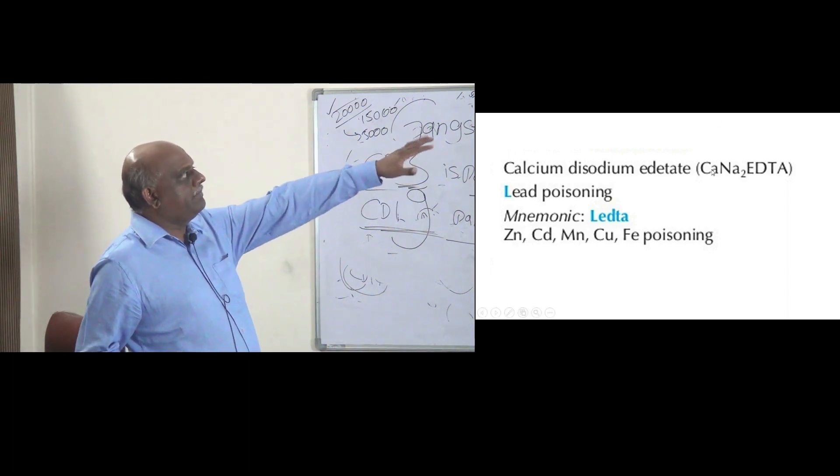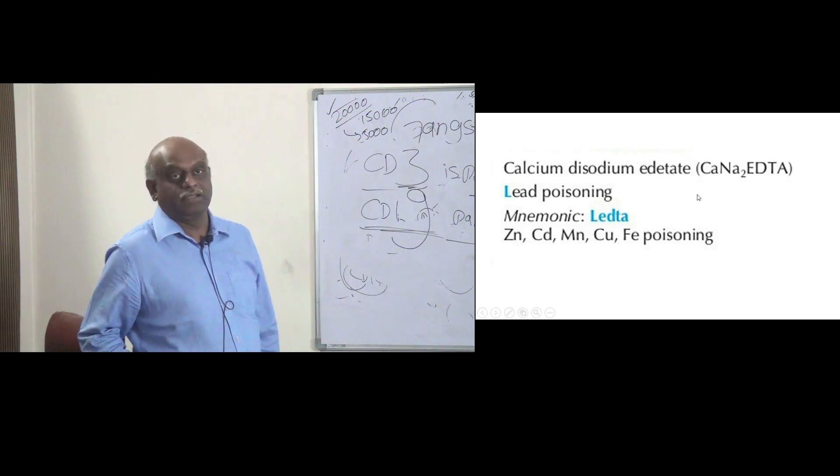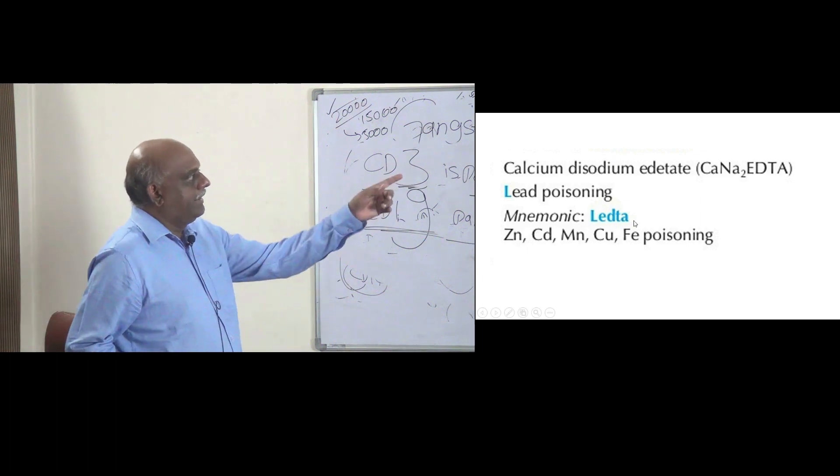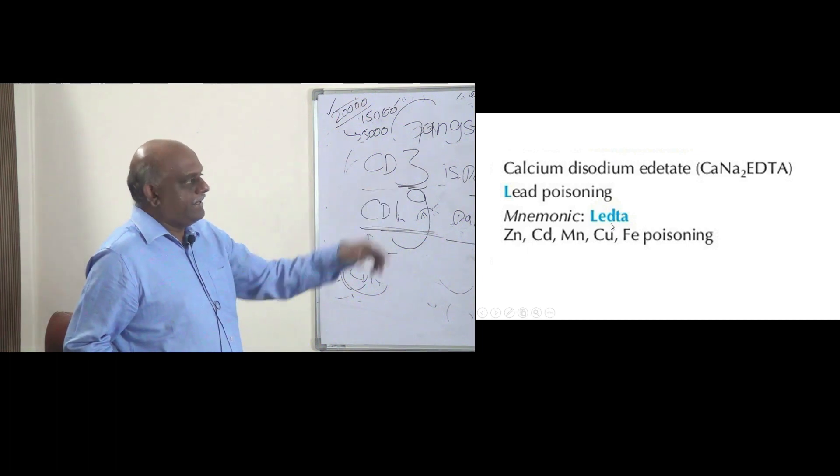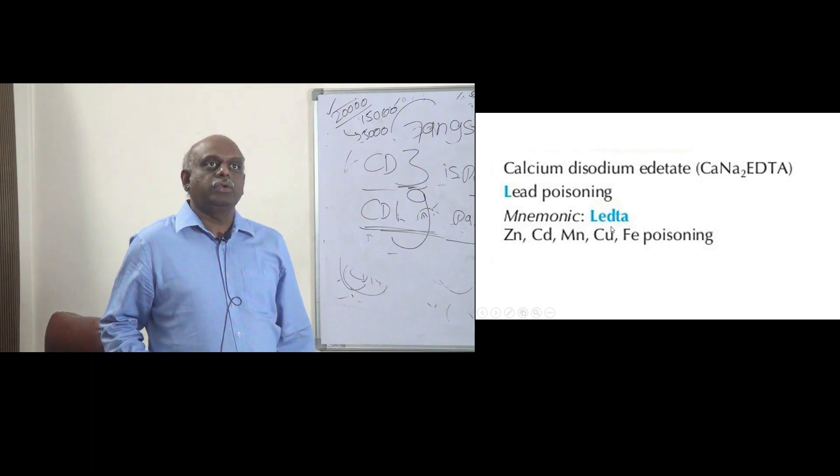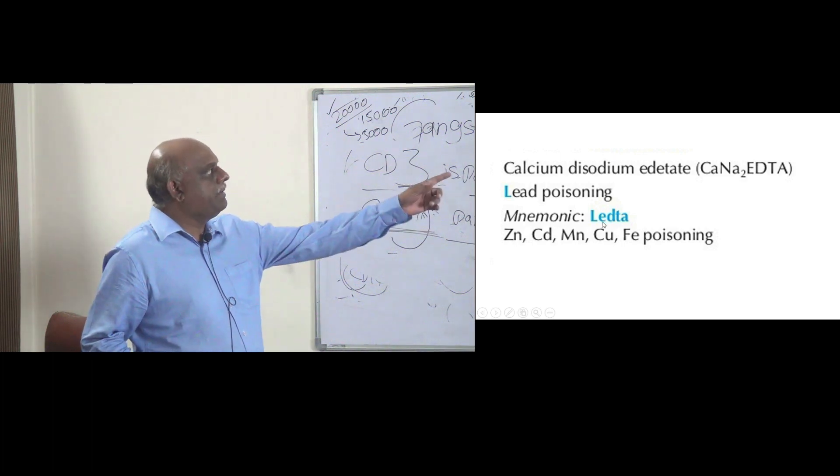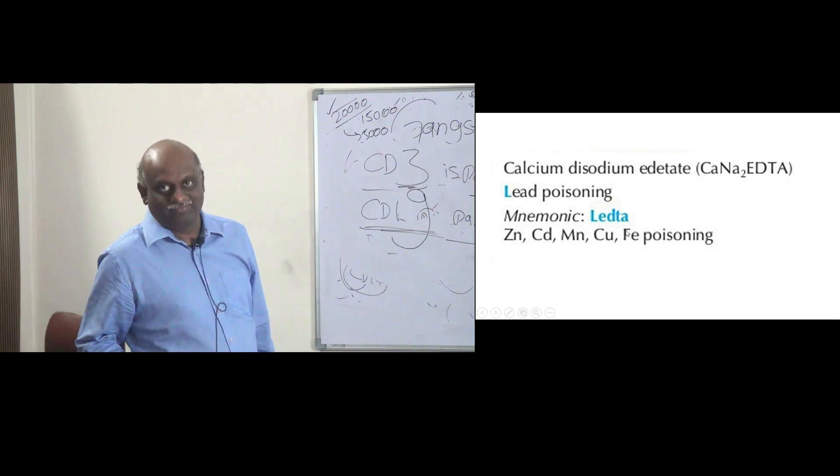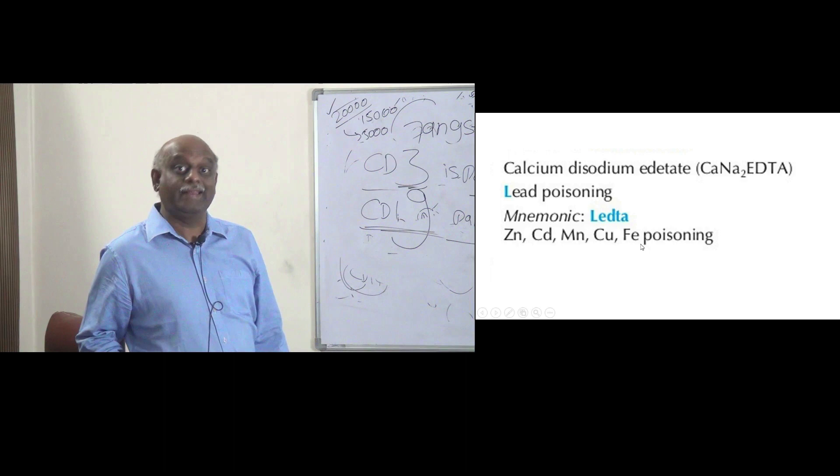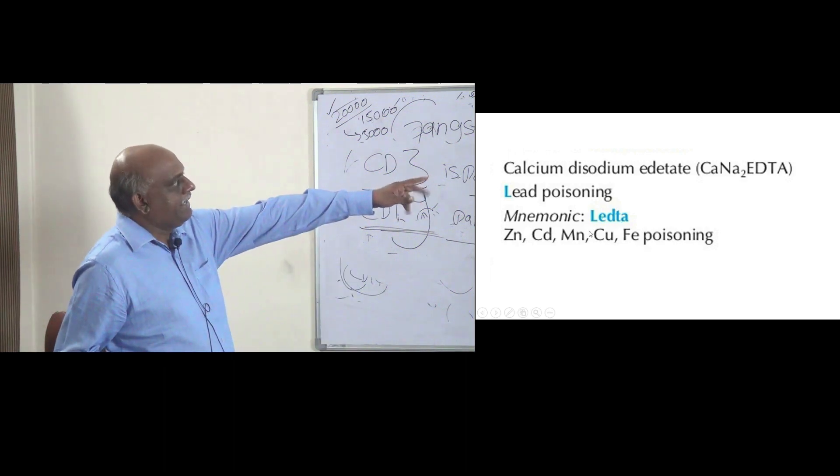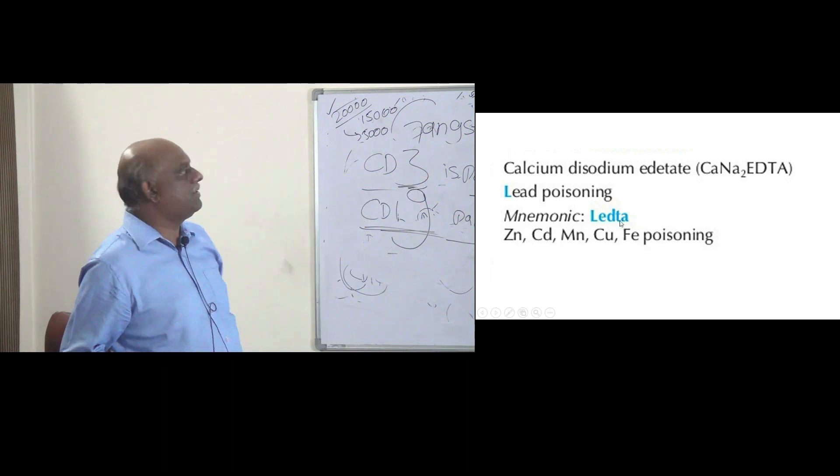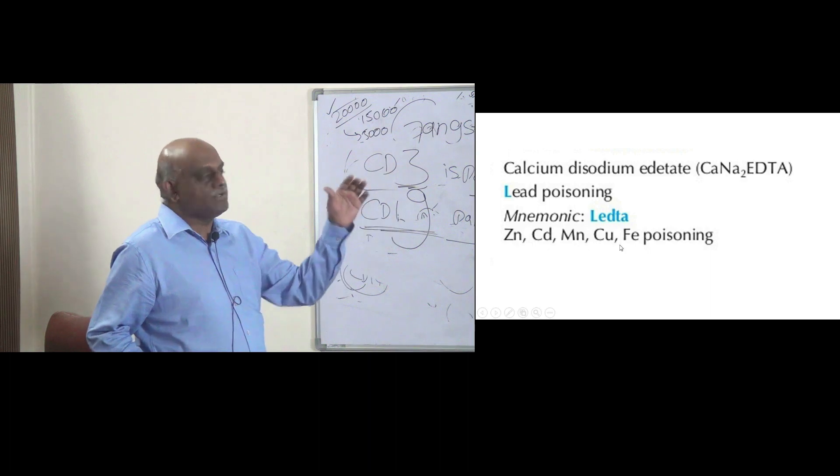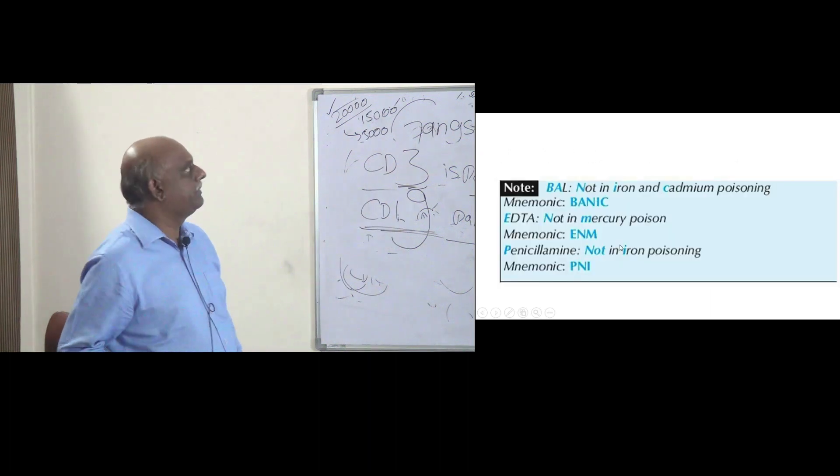Calcium disodium edetate - where do you use it? You use it in lead poisoning. How will you remember? Lead. You can easily remember delta. Instead, you remember it as lead-ta. So instead of delta, you remember lead-ta. So lead-me, EDTA is the one which is being used. Additionally, EDTA is also used in zinc, cadmium, manganese, copper, and iron.